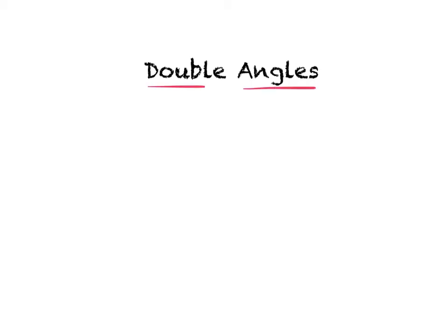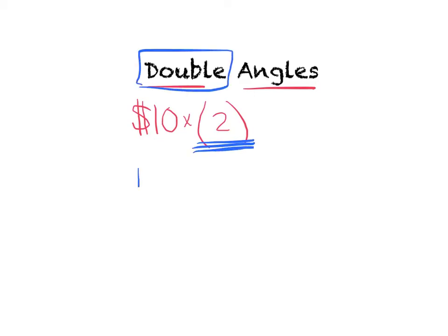Welcome back. Our topic today is double angles. There are two words we want to break down: the word double and the word angle. If I asked you to double the amount of money you get paid per hour at your job, what would you do to that amount? Say you made $10 an hour and I said I'm going to double that amount. Hopefully you're thinking you want to multiply by two — that's what the word double should mean to you. So when we say double, we are implying to multiply by two.